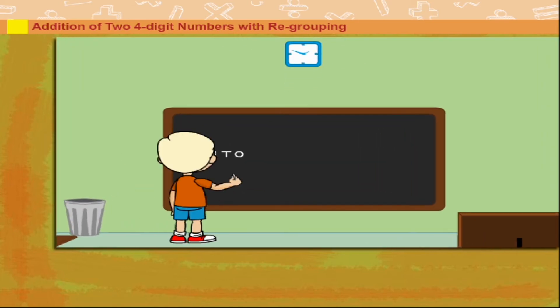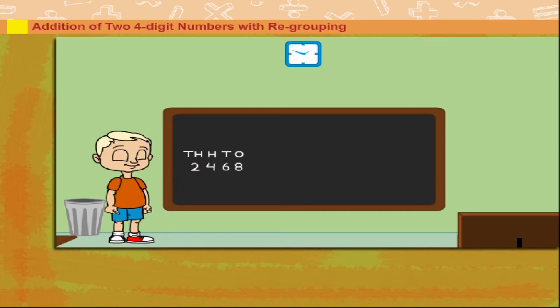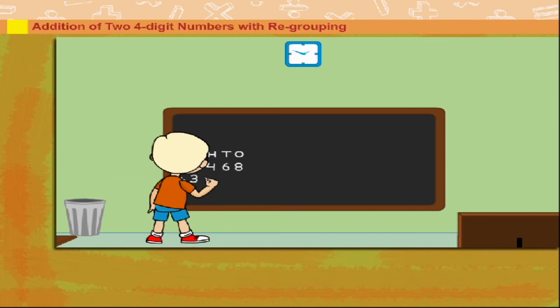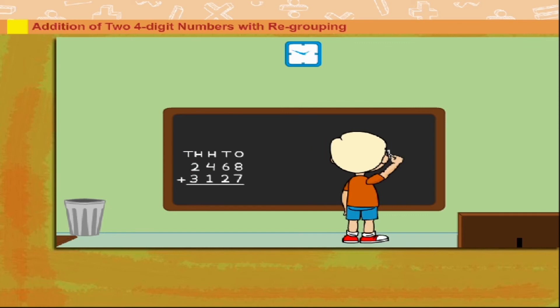He writes 2468 under the unit symbols to which he has to add 3127. He adds separately: 8 plus 7 equal to 15.